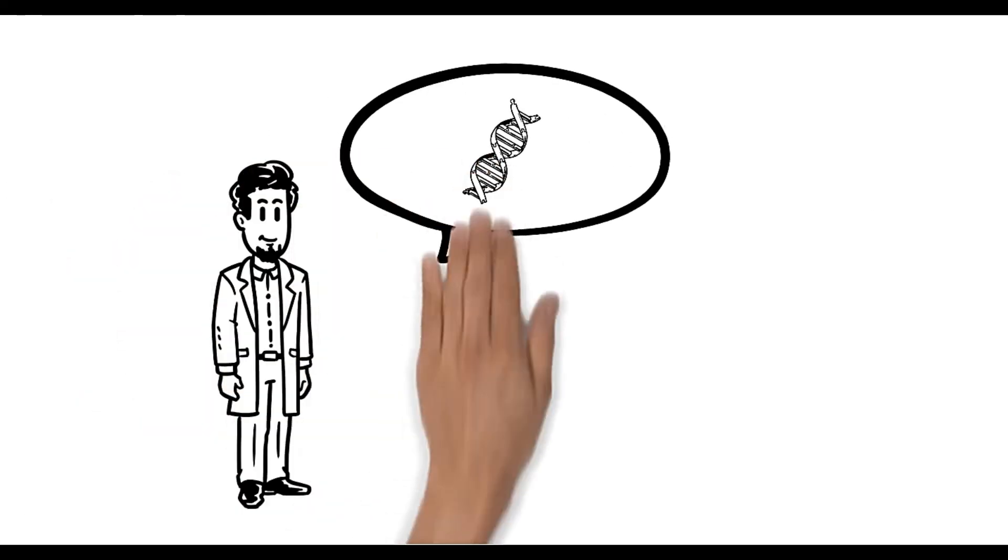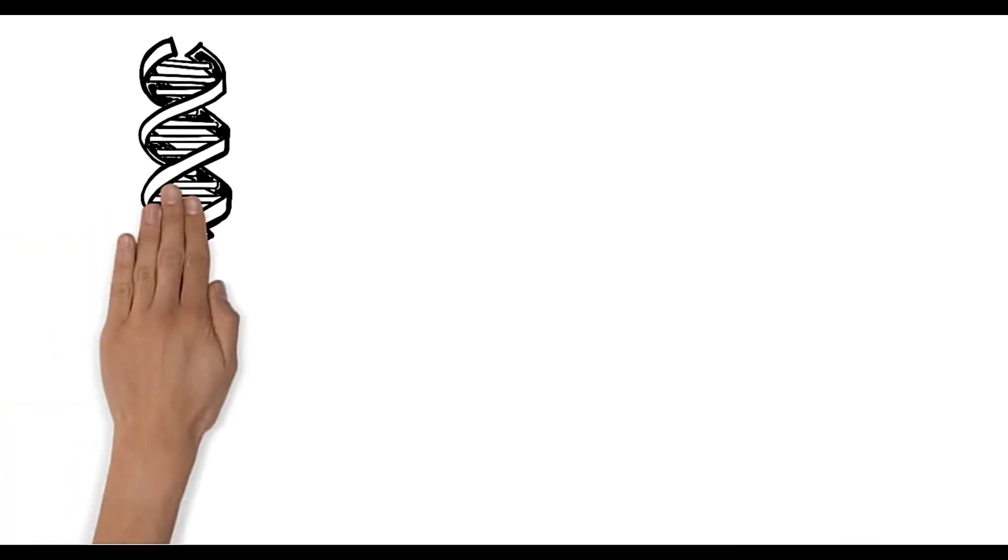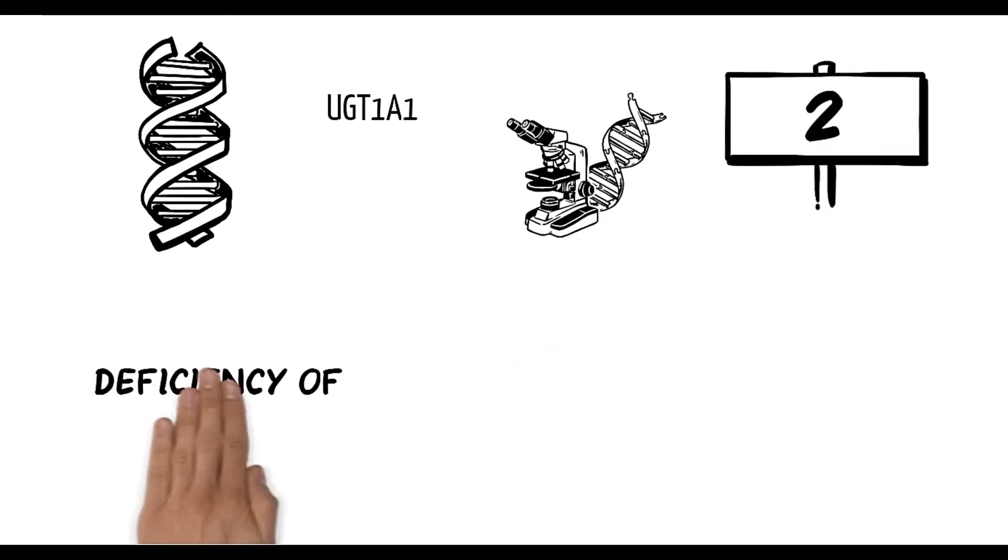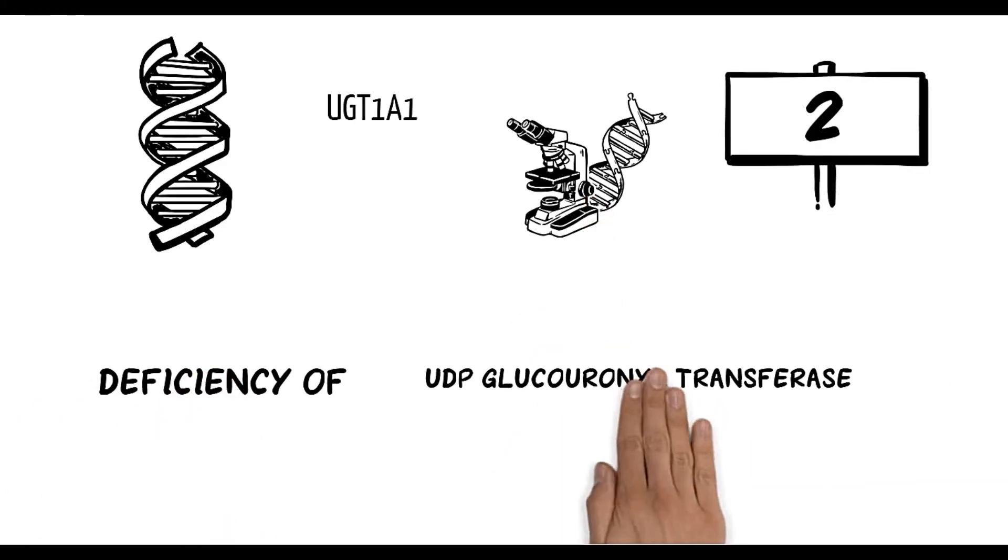Finally, the doctor diagnoses this to be Gilbert syndrome. It is caused due to mutations in the UGT1A1 gene, which is located on human chromosome 2, and further leads to the deficiency of UDP glucuronyl transferase.